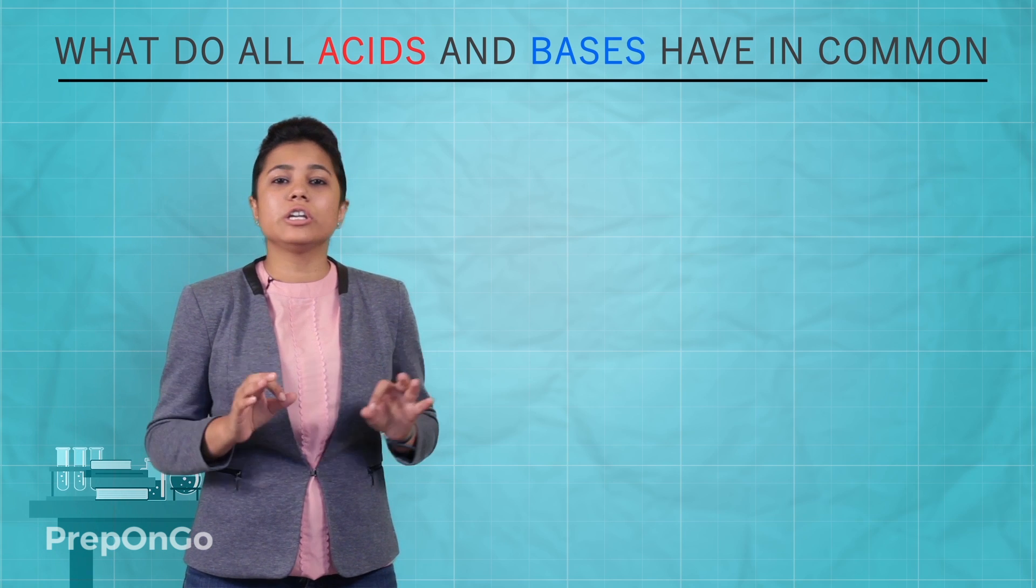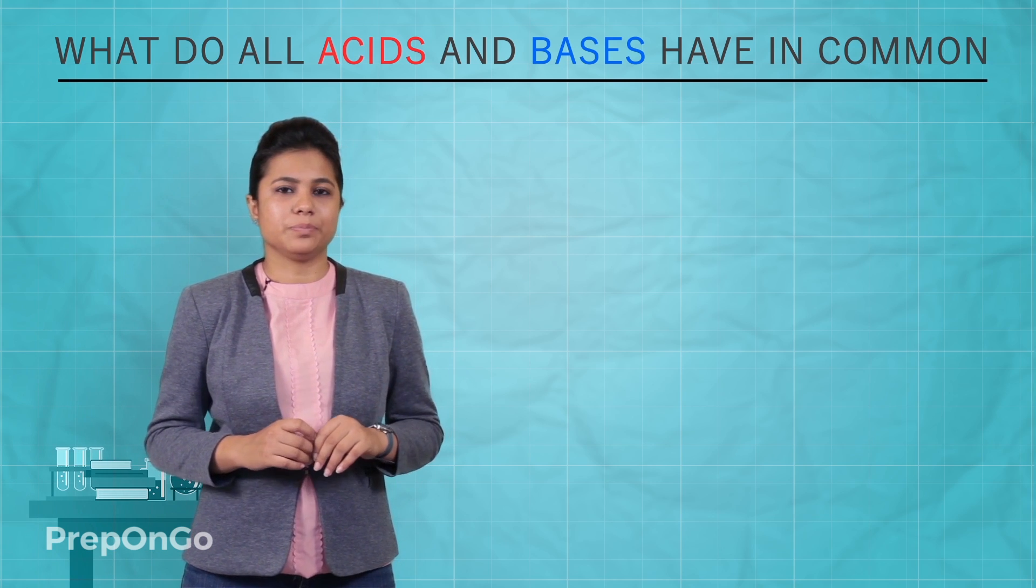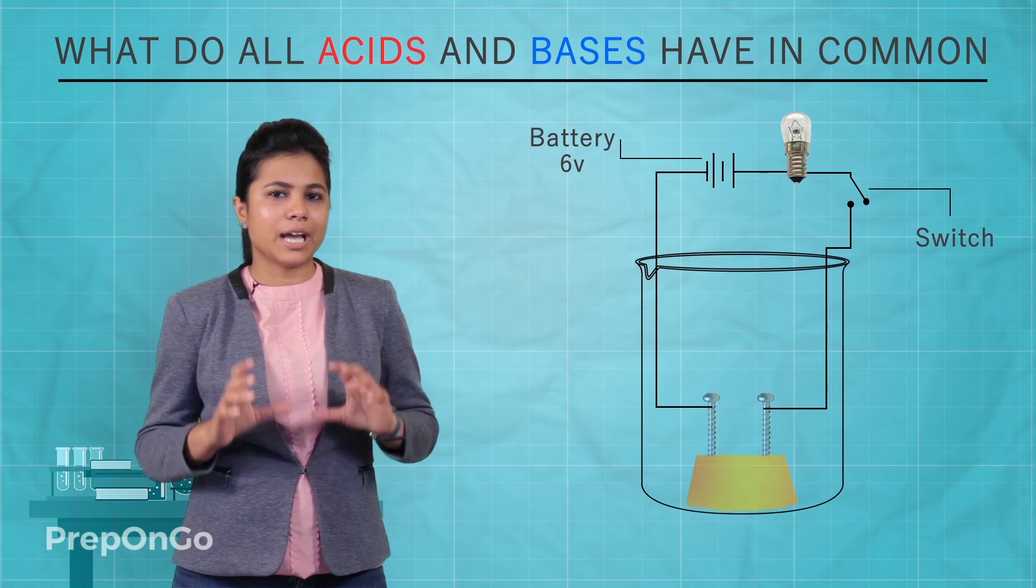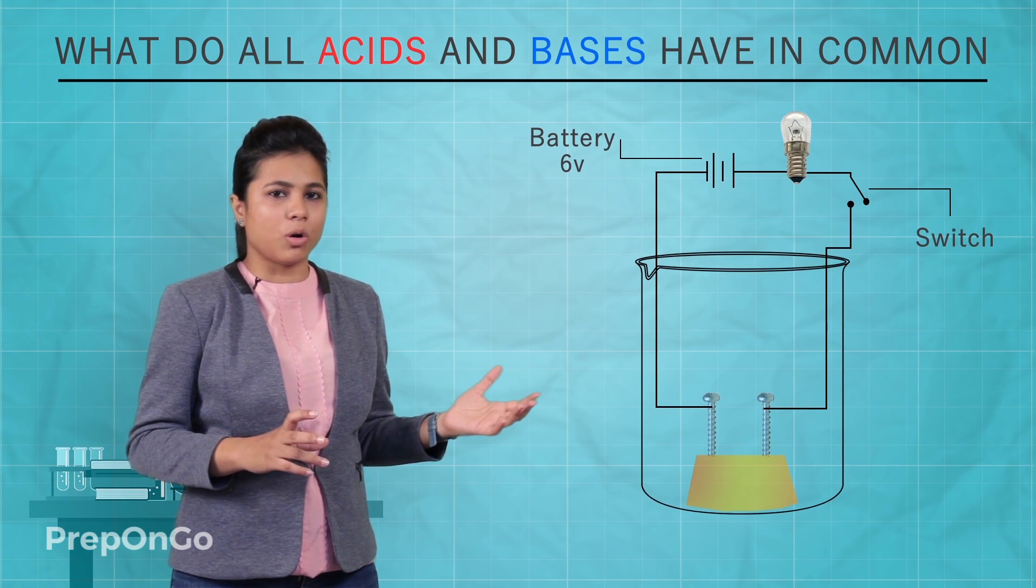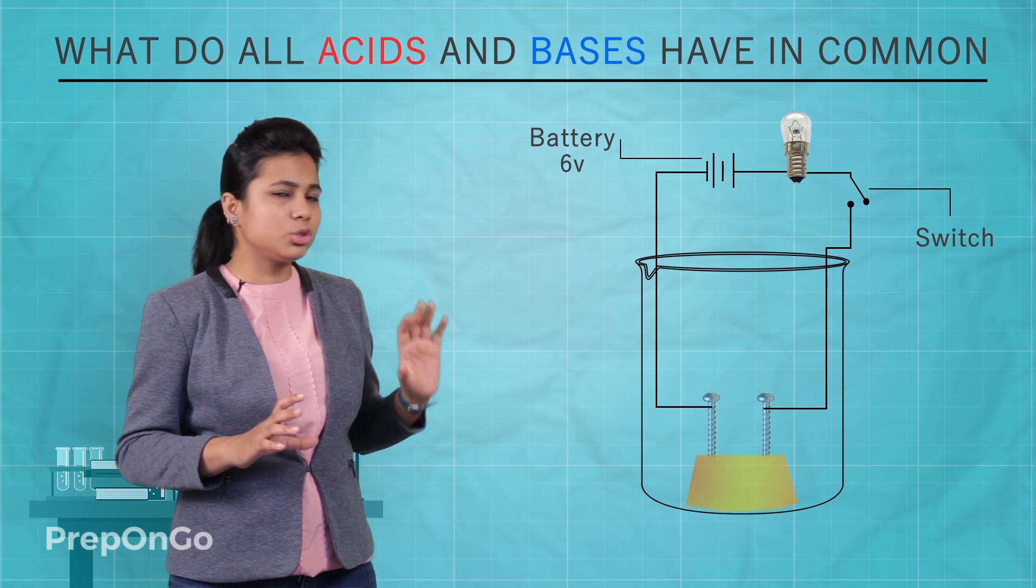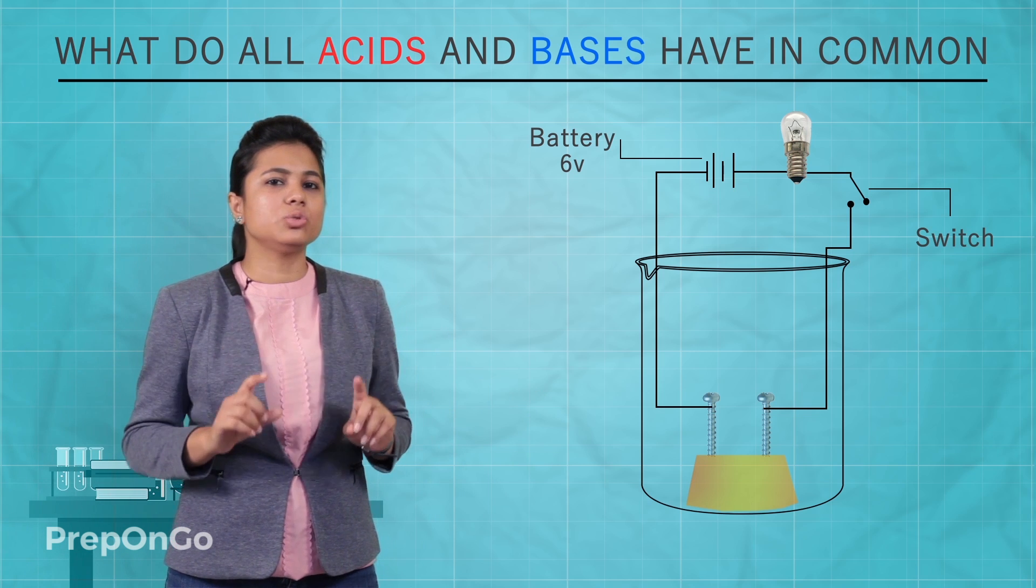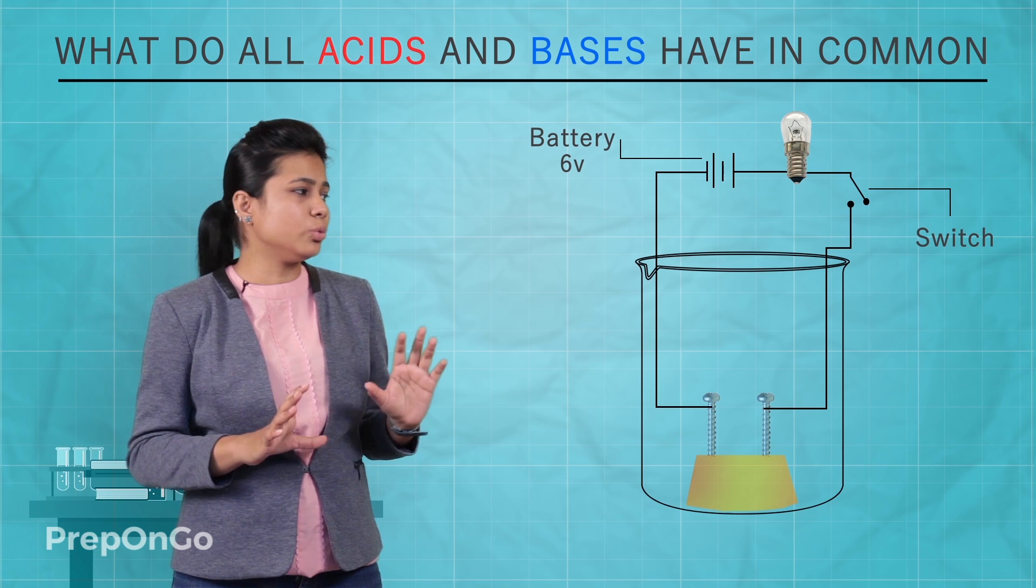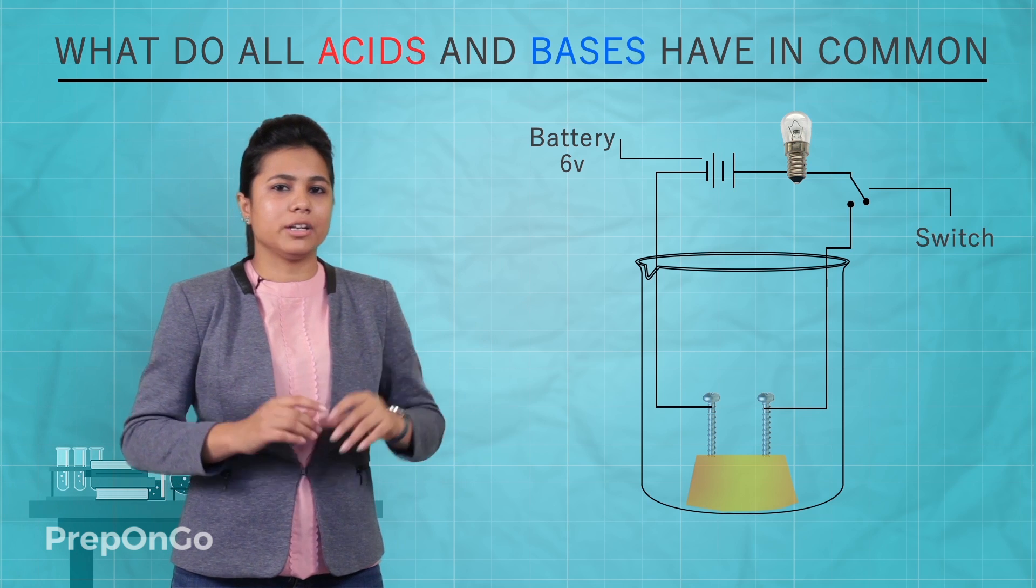For doing this, we are going to perform a simple activity. We need a setup: a beaker with a rubber cork. This rubber cork has two nails in it, and these two nails are connected through a six volt battery through a bulb and a switch.